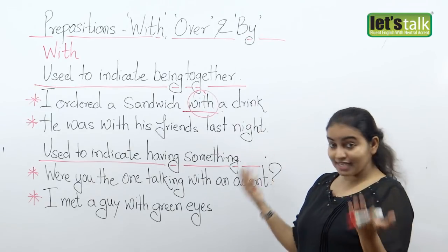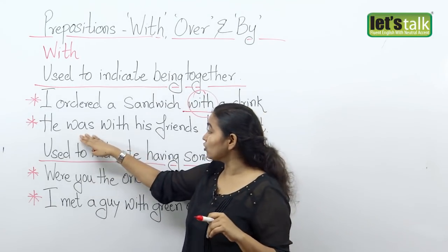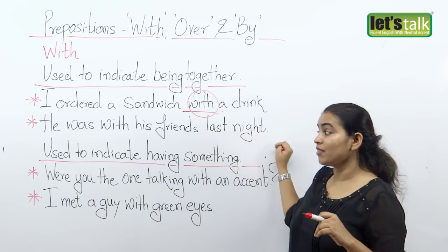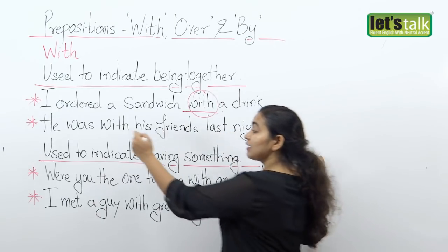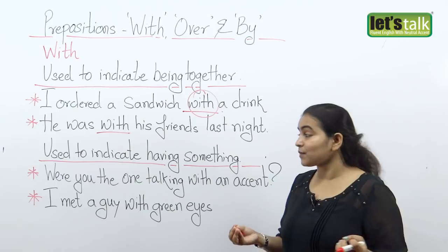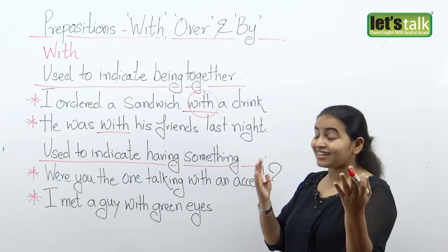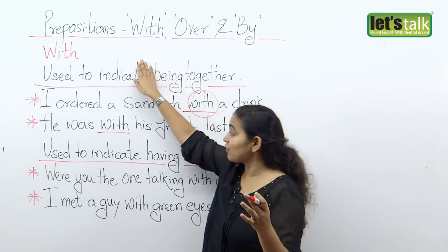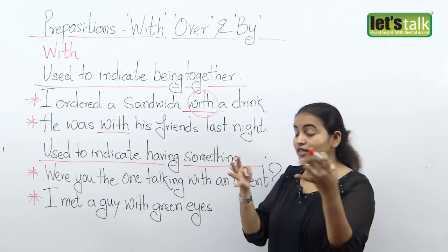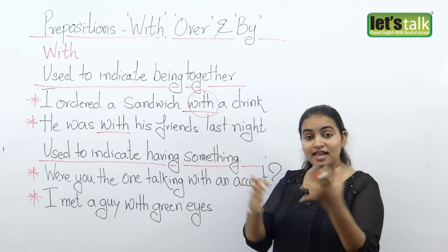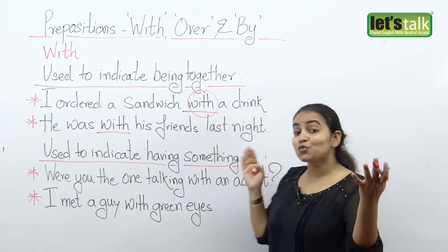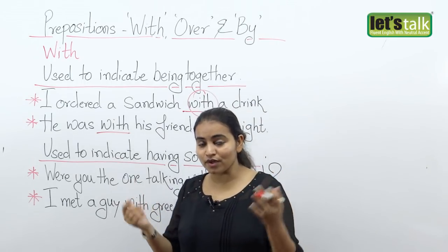Then you have a sentence like 'He was with his friends last night.' Again, I use the word 'with' because it talks about being together — they were together last night. That's one of the ways you can use the word 'with,' but there are various other ways of using the same preposition.